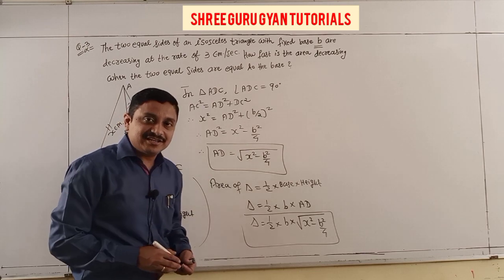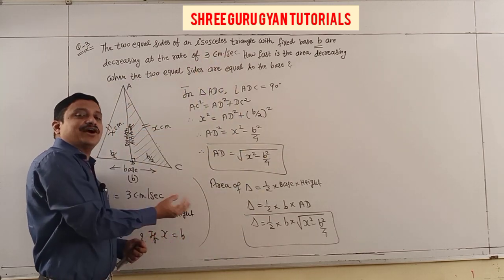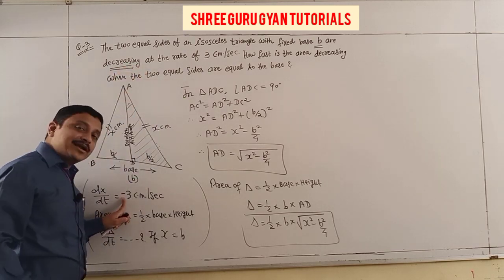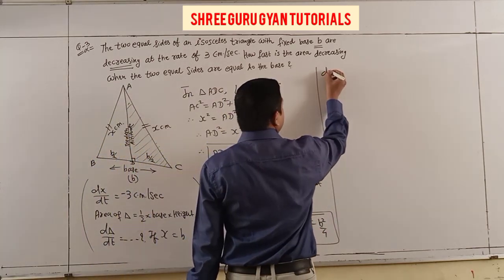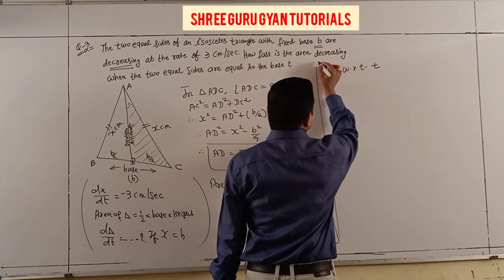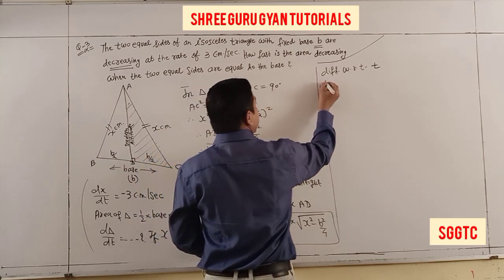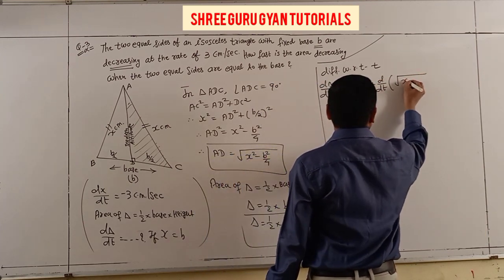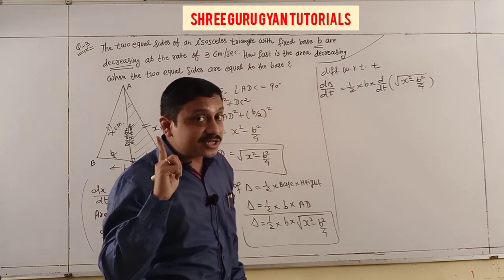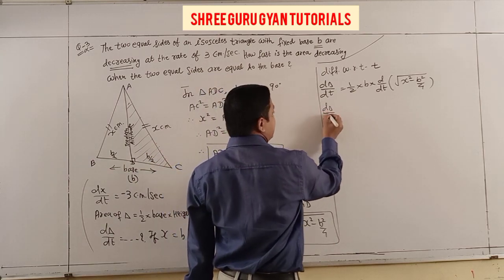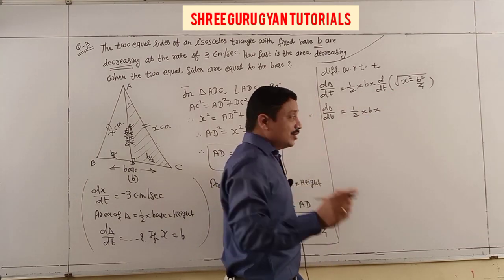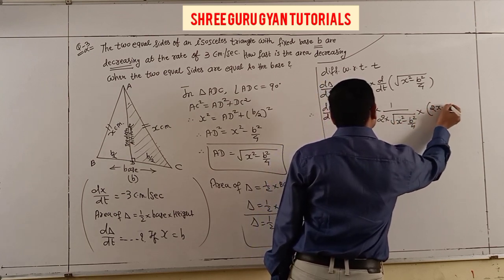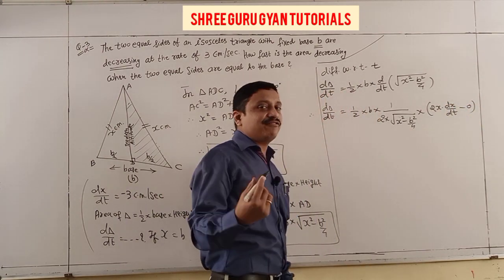Now differentiating with respect to time: dA/dt = (1/2)·b · d/dt[√(x² - b²/4)]. Since b is constant, only x is variable. Applying the chain rule: dA/dt = (1/2)·b · (1/(2√(x² - b²/4))) · 2x · dx/dt.